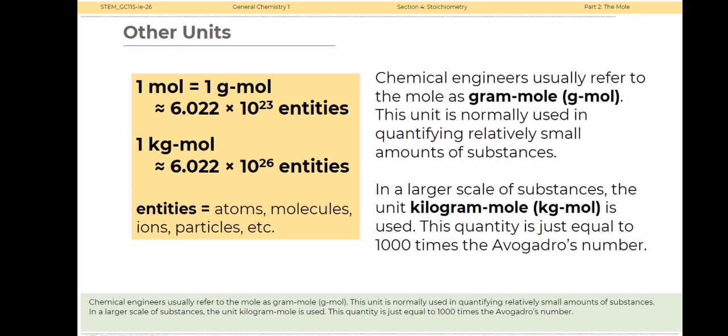Chemical engineers usually refer to the mole as a gram mole or gram-mole. This is normally used in quantifying relatively small amounts of substances. In a larger scale of substance, the unit kilogram is used. This quantity is equal to 1000 times the Avogadro's number.